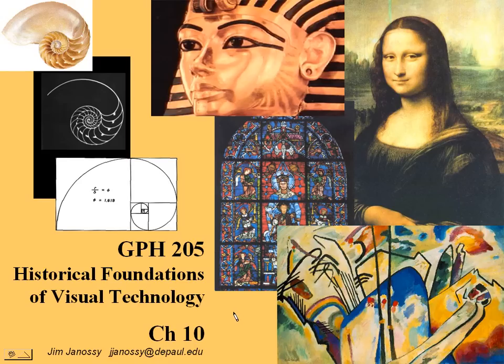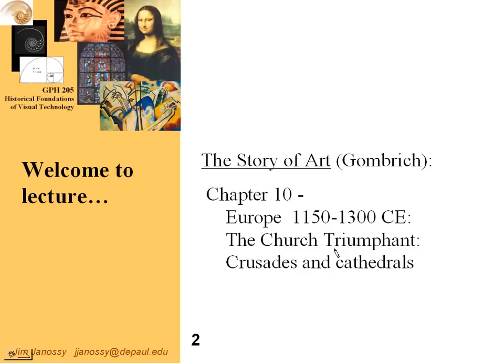Hi, this is Jim Janesey. This is a lecture for Chapter 10 in the Gombrich textbook, The Story of Art. What we're going to be looking at here is called by Gombrich the Church Triumphant, from the late Middle Ages — actually the end of the Middle Ages and into the era that preceded the Renaissance, which is usually called the Gothic Era.